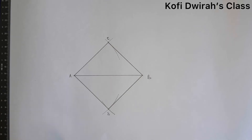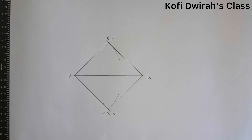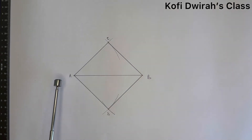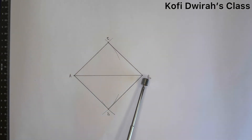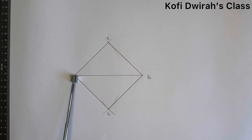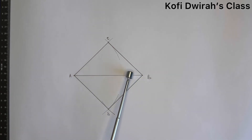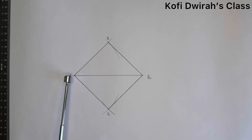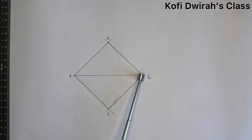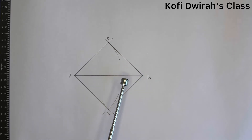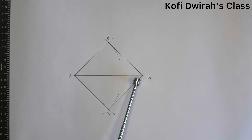Good — so now we have the square. Line AB is the diagonal of the square.